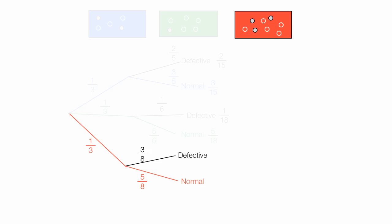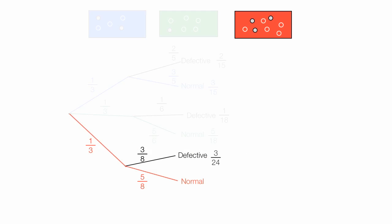Going back to the beginning — what's the chance of picking a red box then getting a defective part? I take three-eighths times one-third, which equals three over 24. What is the probability of picking the red box then getting a normal part? I take five-eighths times one-third, which equals five over 24.